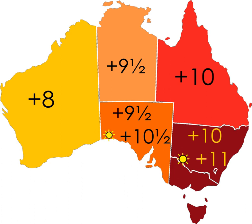Documents to be filed in a federal court may be filed based on local time. The effect of this is that if there had been a failure to file a legal document on time in an eastern state, that document can sometimes still be filed within two hours in Western Australia.